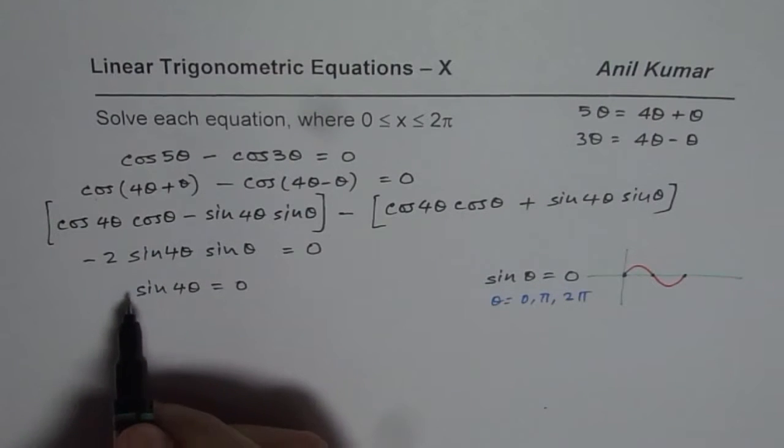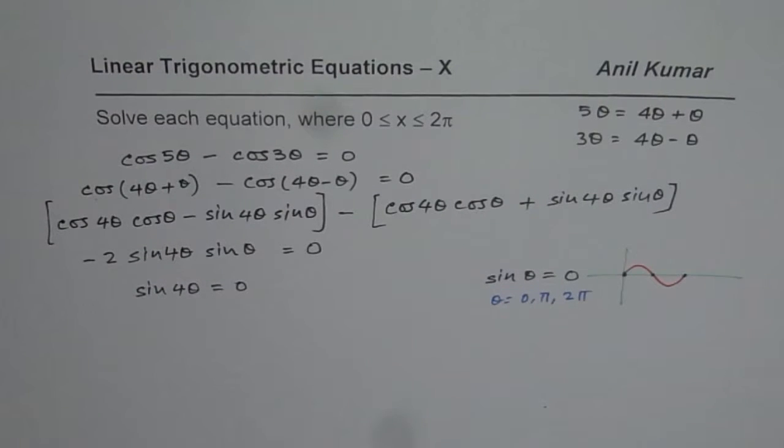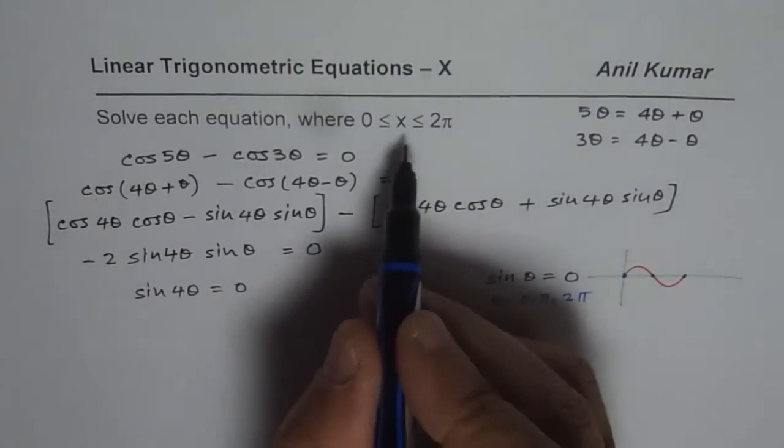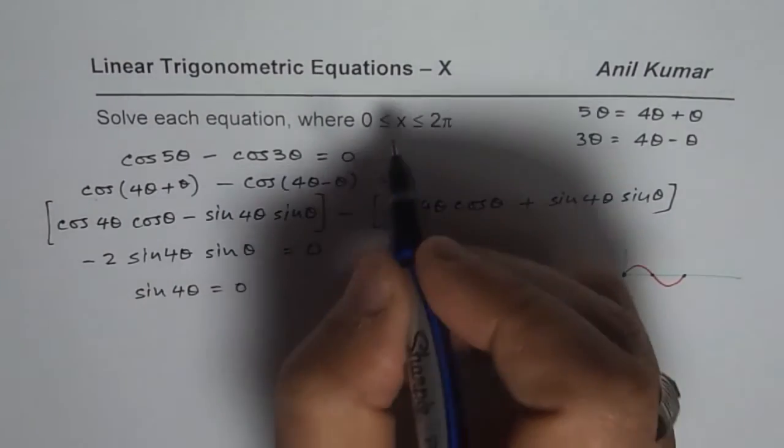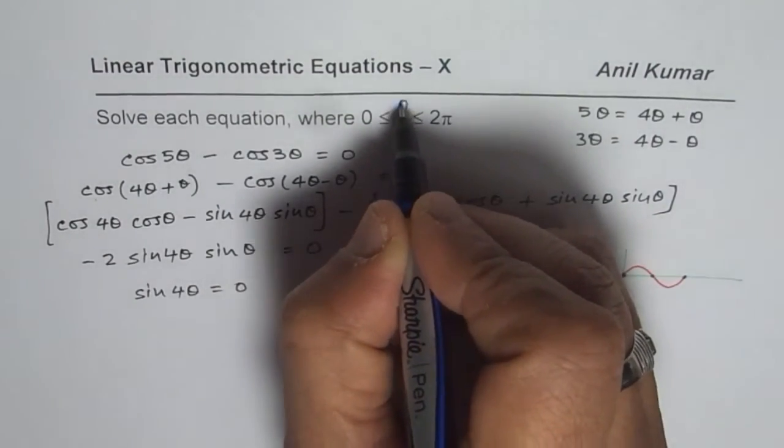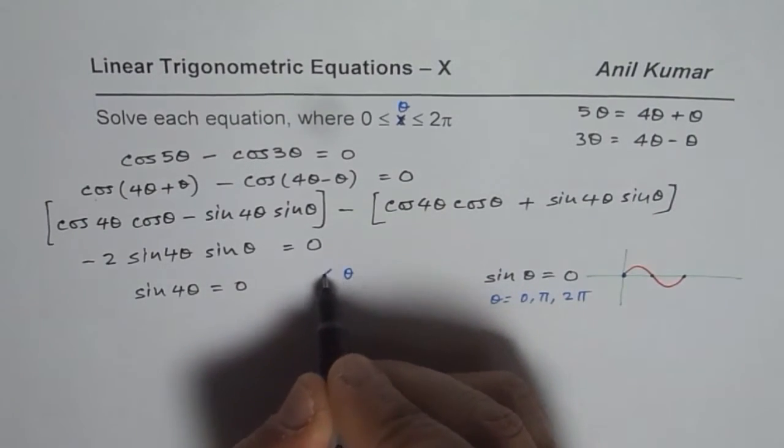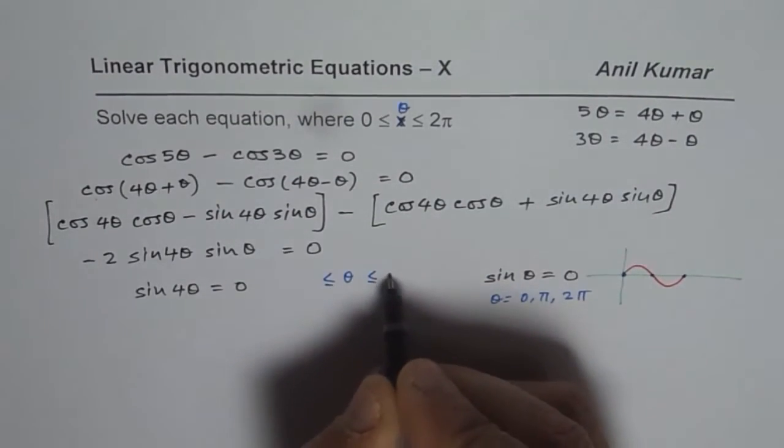Now when we say sin 4θ equals 0, what does it mean? We'll look into this in detail. I should have written θ here since I'm using θ. So θ is between 0 to 2π, correct?